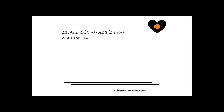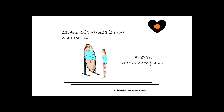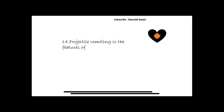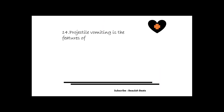The thirteenth question is: anorexia nervosa is common in whom? The answer is adolescent females. It is an eating disorder. Common symptoms include trying to maintain a below-normal weight through starvation or excessive exercise.